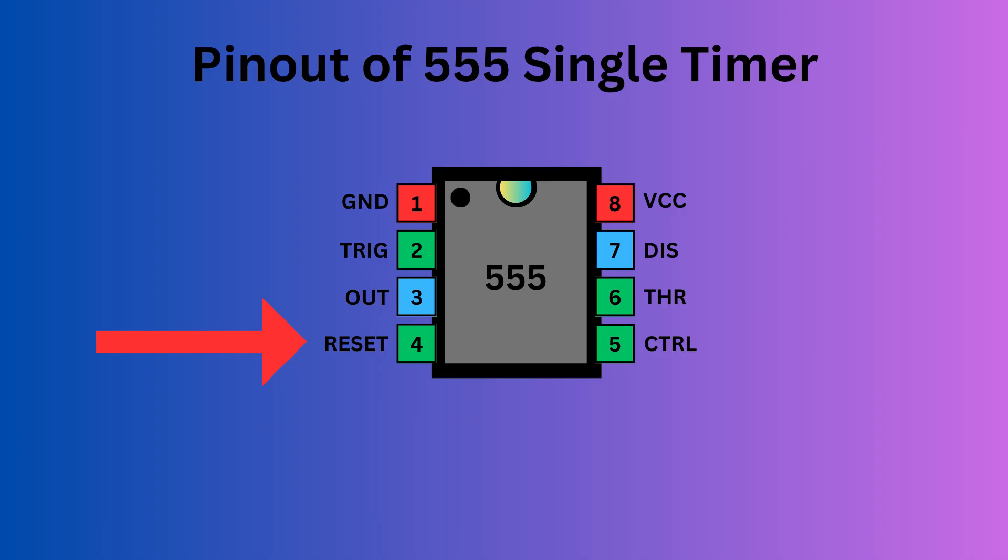Pin 4, the reset pin, is used to reset the 555 timer's internal flip-flop. Pin 5 serves as the control pin, enabling you to adjust the threshold voltage levels used by the internal comparators to set and reset the flip-flop.